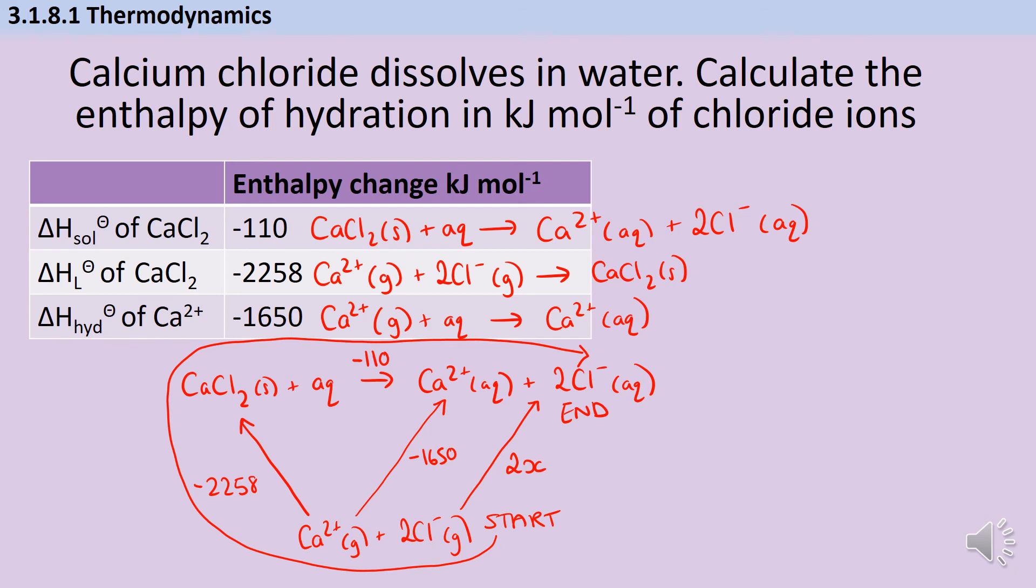So this time around, I've gone the right way up my enthalpy of lattice formation arrow, so -2258. And then I've gone the right way along my enthalpy of solution arrow, so that's effectively plus -110, but I'm just being a little bit lazy there. That gives me a value of -2368. So I now know that these two together are -2368.